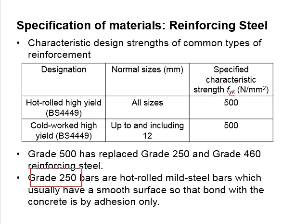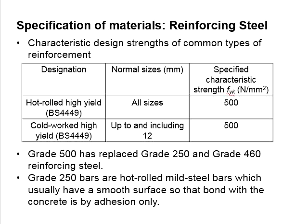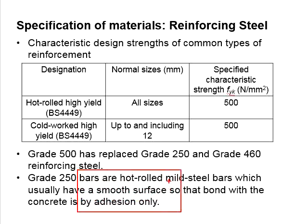Grade 250 steel is still being used for stirrups. It is a hot rolled mild steel bar which usually has a smooth surface, so that the bond with the concrete is due to adhesion only. Without ribs on the surface of the reinforcement bar, mechanical interlocking between the steel and the concrete cannot be ensured. As the grade of steel is not really high, mechanical interlocking may not be necessary.